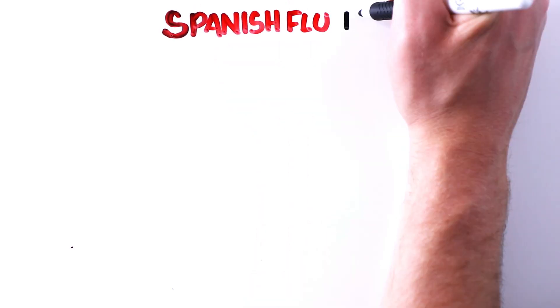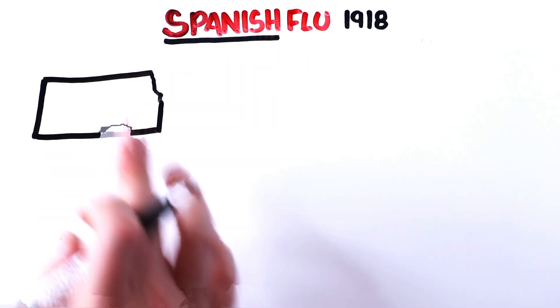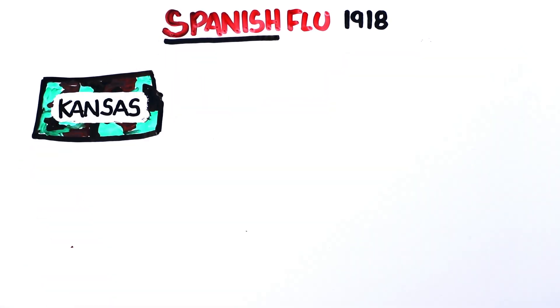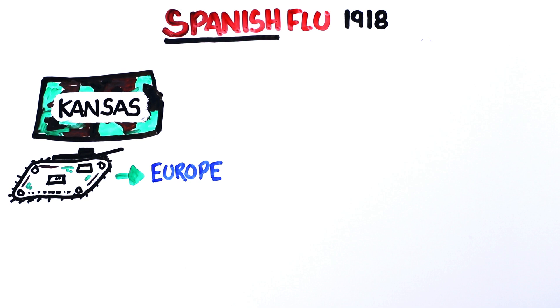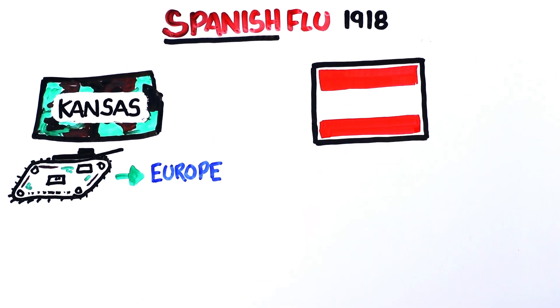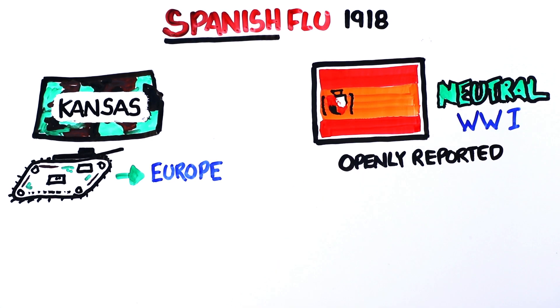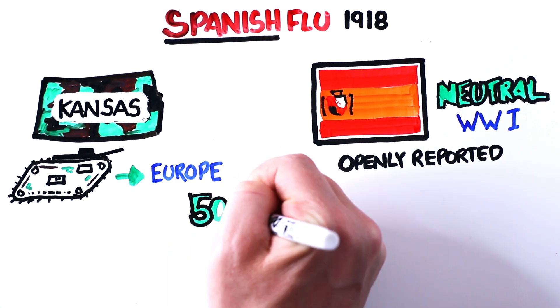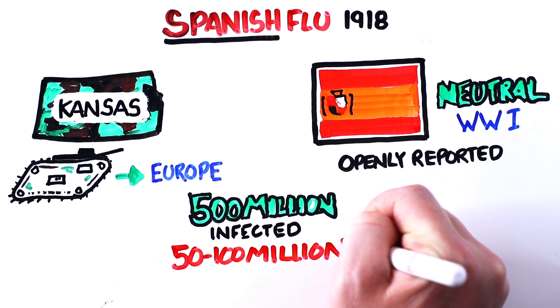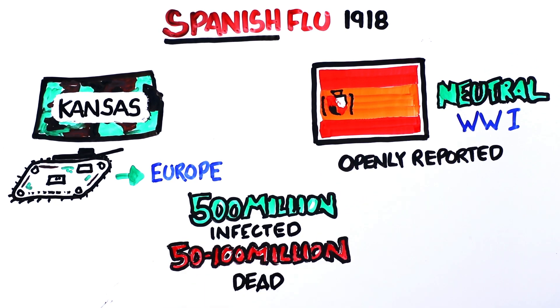Then, of course, you have perhaps the most famous pandemic, the Spanish flu in 1918, which isn't actually named so because it started in Spain. It's believed that it may have originated in an army camp in Kansas, which was then brought over to Europe by troops. But it's named the Spanish flu because Spain, a neutral country during World War I, openly reported on its occurrence, while other countries censored or tried to hide it. This time, 500 million people were infected, and an estimated 50 to 100 million died, which was more people than World War I killed.